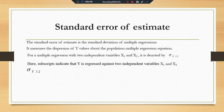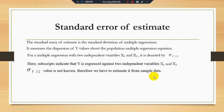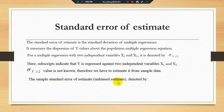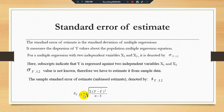Dear students, normally the population standard error is unknown — we cannot find the value of the population standard error, so we have to rely on sample data. For sample data we have a different notation: the sample standard error of estimates, as an unbiased estimate, is denoted by s y·12. The formula for the sample standard error becomes: s y·12 equals the square root of summation (y minus y-hat) squared divided by (n minus 3), where n is the number of observations and 3 is the number of parameters. In this case we have one dependent variable and two independent variables, giving three parameters.